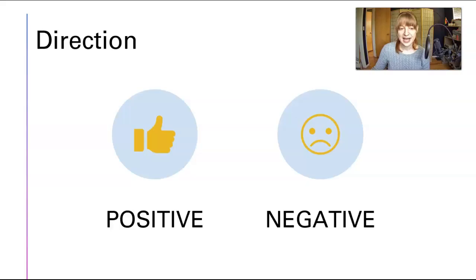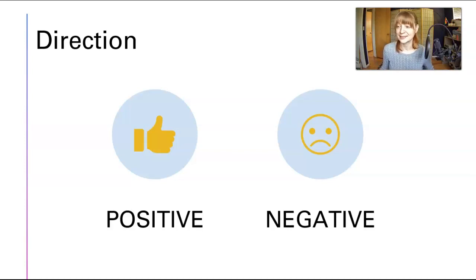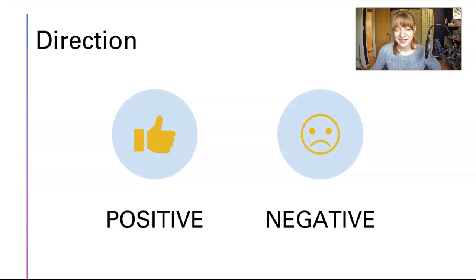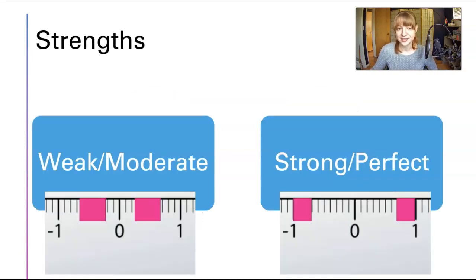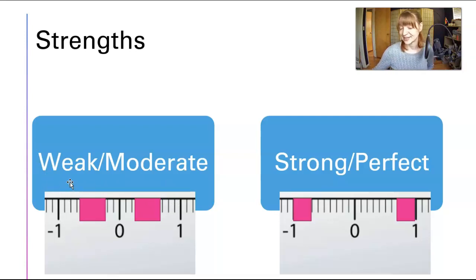First, we have a direction of an association — positive or negative — and remember this is the same as the slope. A positive association is the same as a positive slope, and a negative association is the same as a negative slope. We also have strength, which refers to how close the R value is to 1 or negative 1, and also how close the dots are to the best fit line.